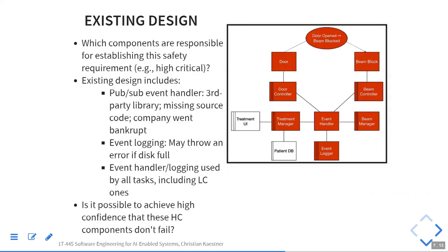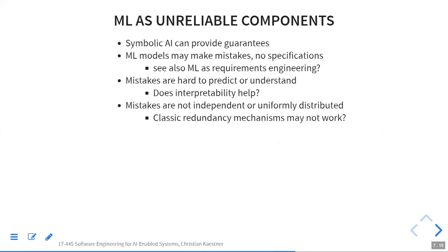All these patterns help when you have unreliable components — which we have with machine learning. Still focus on requirements as well. Machine learning systems make mistakes, we don't have specifications, it's hard to predict when mistakes happen, they're not correlated, and they're hard to understand. Interpretability helps to some degree by giving us confidence in some predictions, but it's probably not a general solution — we're trying to do really complicated things and we don't fully understand what exactly we are doing.